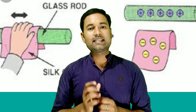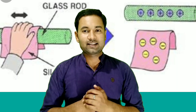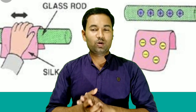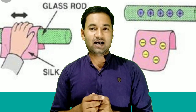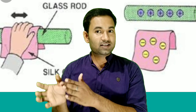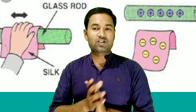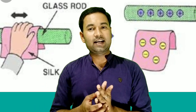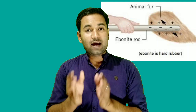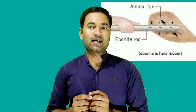If we talk about a glass rod, when rubbed, it becomes positively charged, because glass rod loses electrons and develops a negative deficit — so the charge becomes positive. If we talk about an ebonite rod, it develops a negative charge.